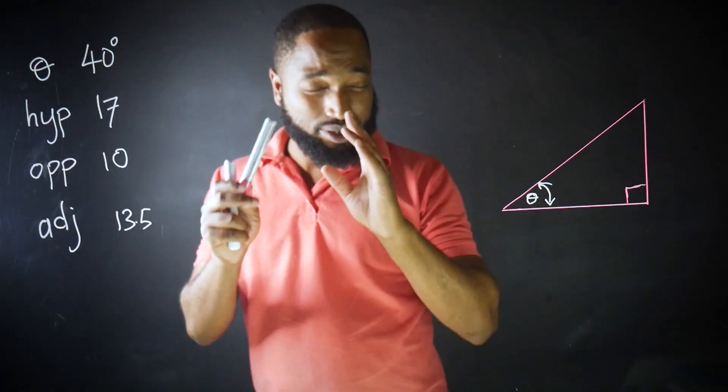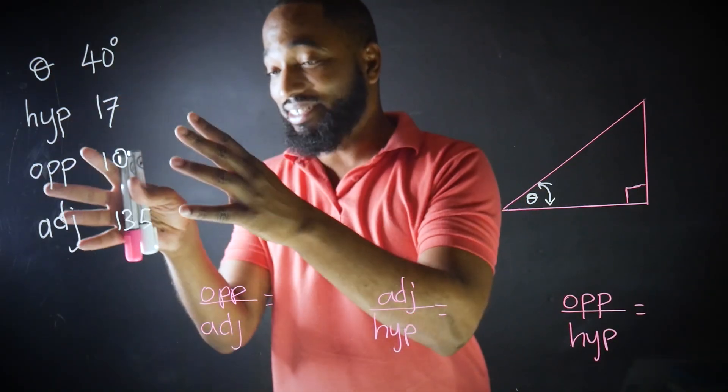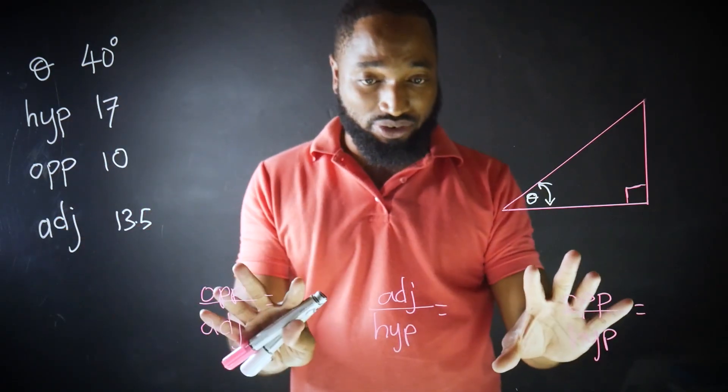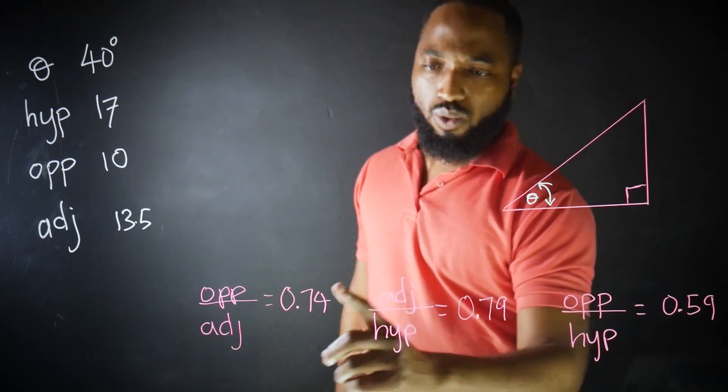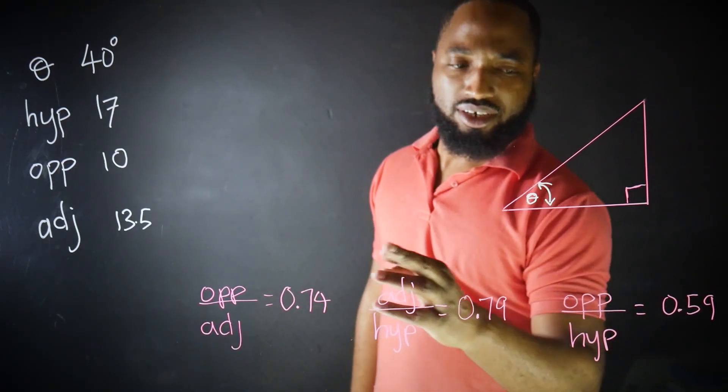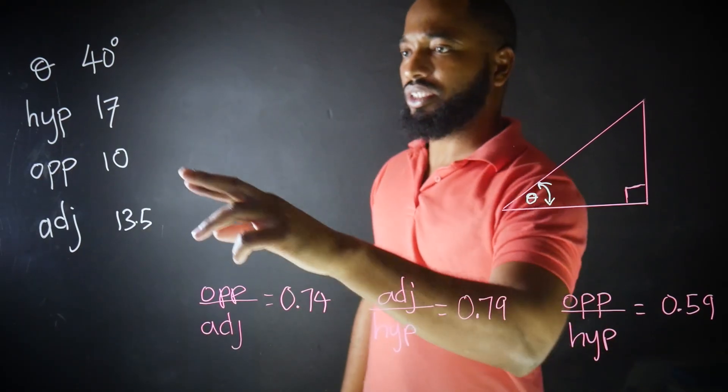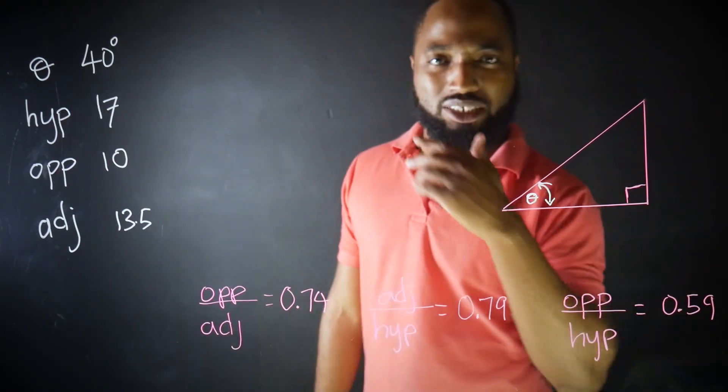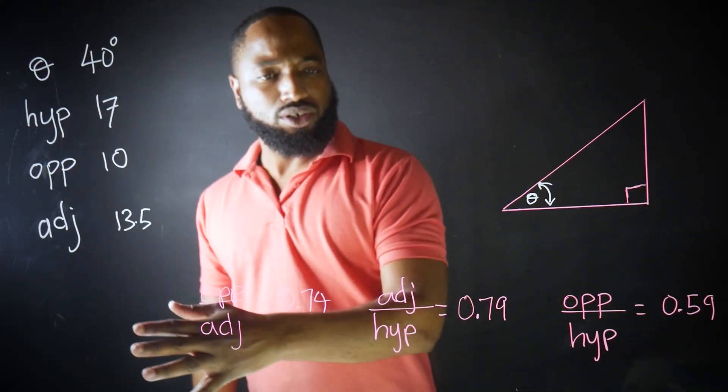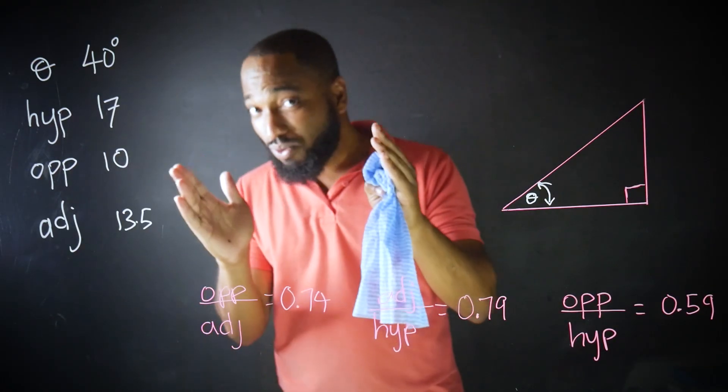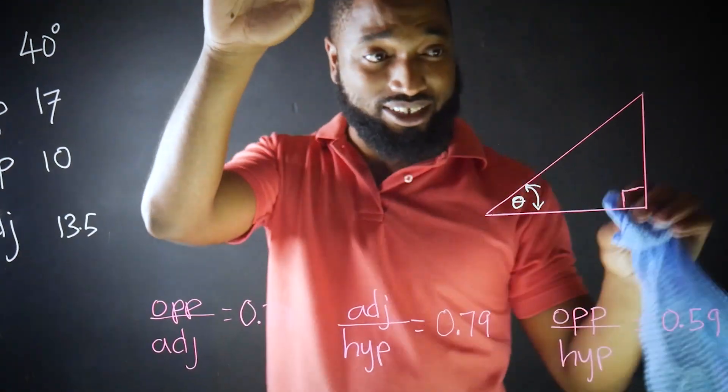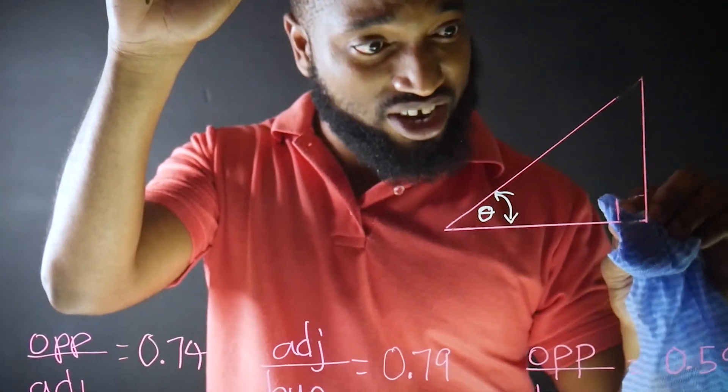Now for the awesome part. If I take these numbers and apply them to these ratios, I get these answers. Well, they are approximated. The opposite over the hypotenuse was 10 over 17, approximately 0.59 and so on. The crazy thing about this that I noticed back in school is that if I erase this part of the triangle here...